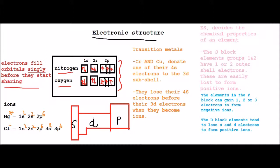So the first thing we need to know is that electrons fill orbitals singly before they start sharing. Our examples are nitrogen and oxygen.